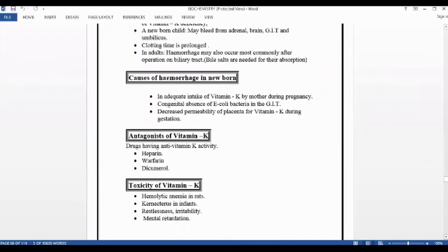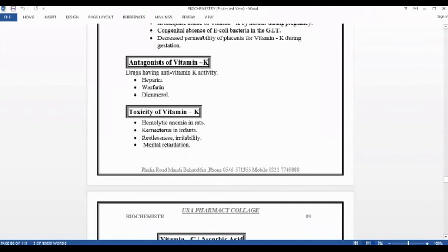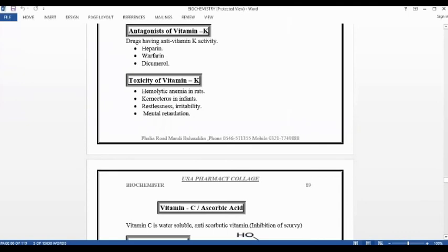The causes of hemorrhage in newborn. Inadequate intake of vitamin K by mother during pregnancy. Congenital absence of E. coli bacteria which is present in GIT. Decreased permeability of placenta for vitamin K during gestation period. The placenta has very low permeability for vitamin K, so deficiency can occur in the baby.